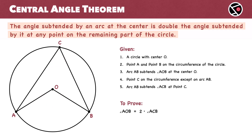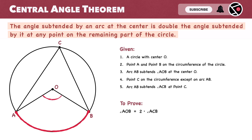Before we dive into the proof, let's take a closer look at this theorem. The arc AB forms angle AOB at the center O and another angle ACB at point C. According to the Central Angle Theorem, if angle ACB is theta, then angle AOB will be two times theta.